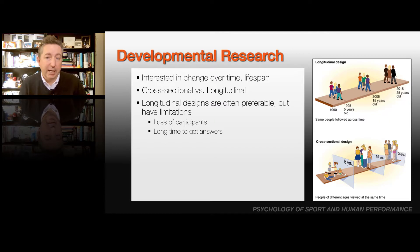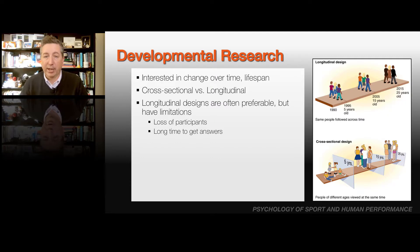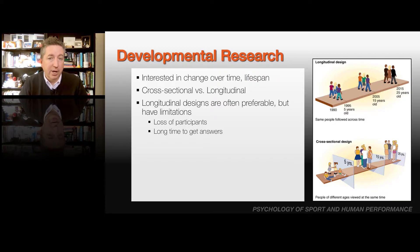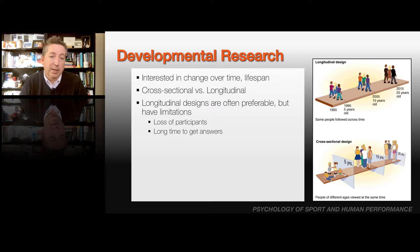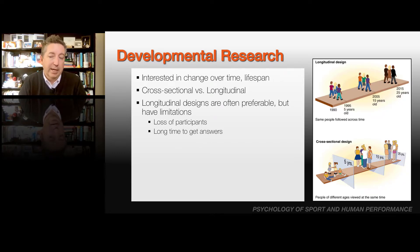A longitudinal design, on the other hand, follows one single group of people over time as they grow and progress through different age groups or different stages of sport development. Longitudinal designs are often preferable — they give us more rigorous and strong inference answers. But there are limitations: you can lose participants over time, especially over a long period, as people may die, move away, or choose not to participate anymore. It can also take a long time to get answers, especially for questions about the impact of childhood experiences on later adulthood.